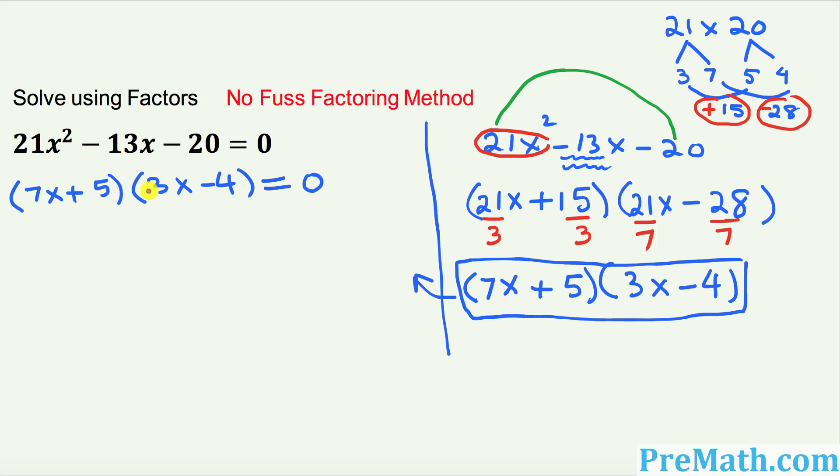Now since we have these two parentheses, these two parentheses, they are multiplying and they are equal to 0, what I can do is I can break them down and put as two separate equations. You can see 7x plus 5 equal to 0 and the second equation become 3x minus 4 equal to 0.